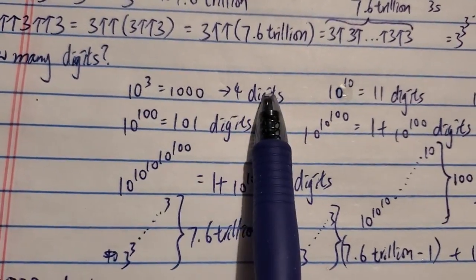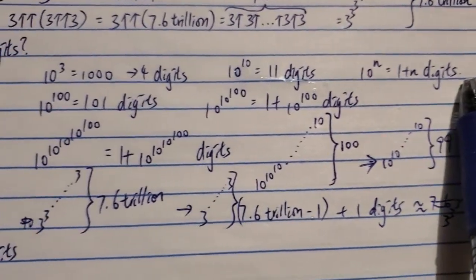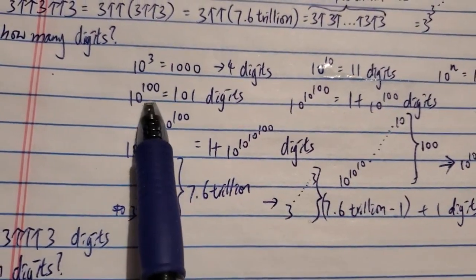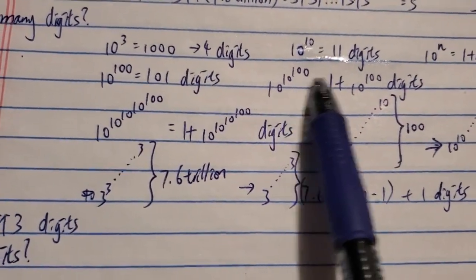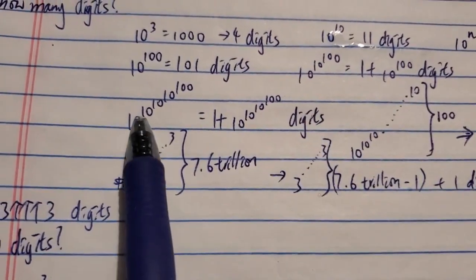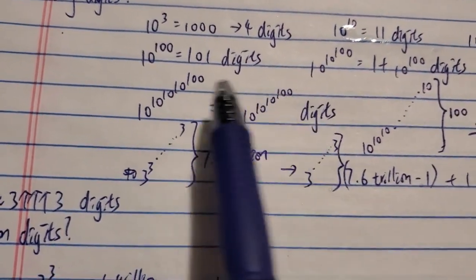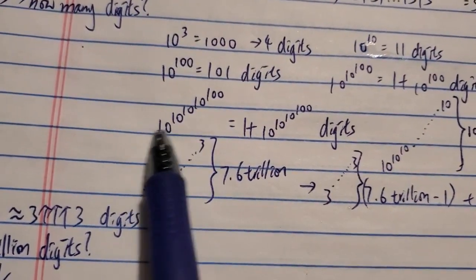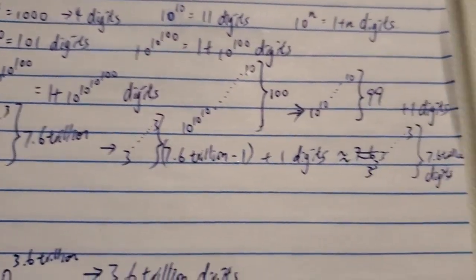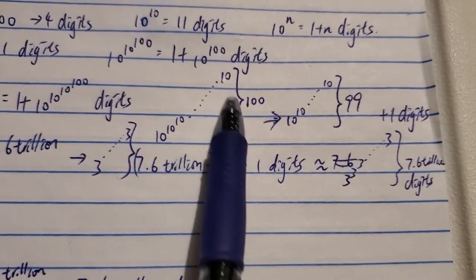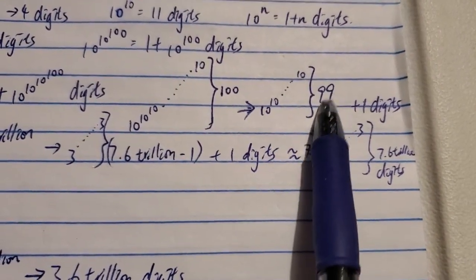How many digits does a number have? Basically: 10 to the 3 has 4 digits, 10 to the 10 has around 11 digits, so 10 to the n has around n+1 digits. It follows the pattern: 10 to the 100 has 101 digits, and 10 to the googol — googolplex — has 1 plus googol digits. So 10 to the 10 to the 10 to the 100 has 1 plus (10 to the 10 to the 100) digits. This thing plus 1 is the number of digits. So 10 to the 10 to the 10 with 100 tens — how many digits does it have? It's 10 to the 10 to the 10 with 99 tens, plus 1.